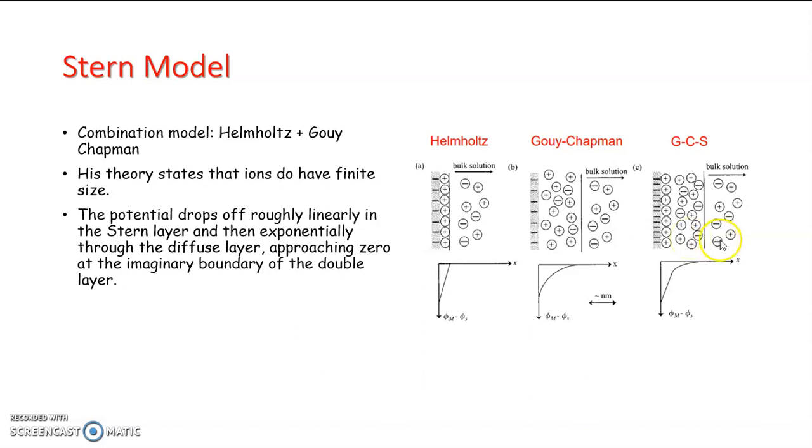As we leave the surface, the potential drops off linearly in the Stern layer, then exponentially in the diffused layer as you go to large distance from the wall.